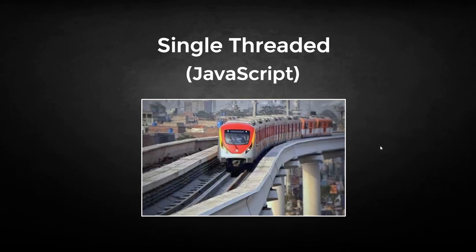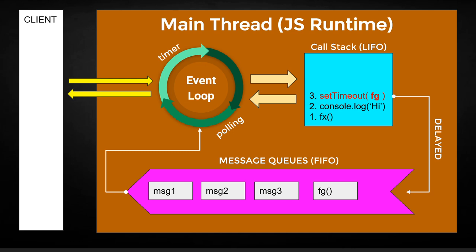We know that JavaScript is a single-threaded language. Think of a train that runs on a single track responsible for delivering all these messages along this track. So if there's anything blocking this track, everything comes to a halt, and you don't want that to happen on your web pages. The event loop is part of the main thread inside the JS runtime on the browser, responsible for interacting with the client, processing information, and responding to the client based on what it receives.